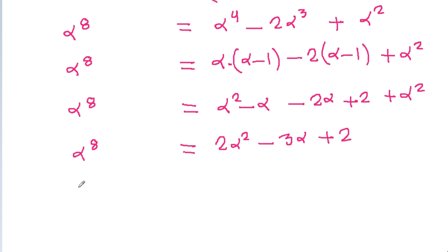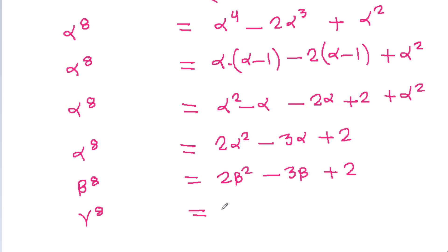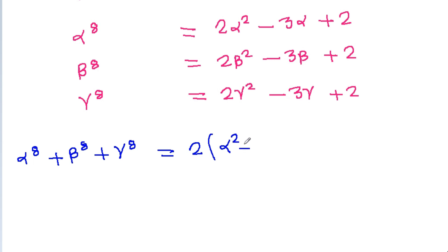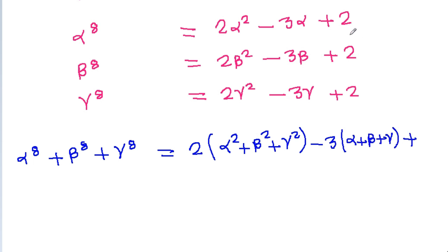In the same way, we can get beta⁸ = 2beta² - 3beta + 2, and gamma⁸ = 2gamma² - 3gamma + 2. Adding alpha⁸, beta⁸, and gamma⁸, we get 2 times (alpha² + beta² + gamma²).